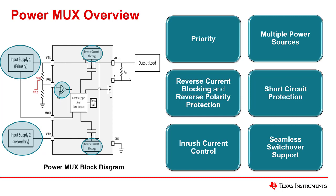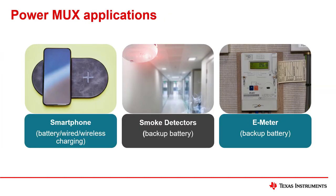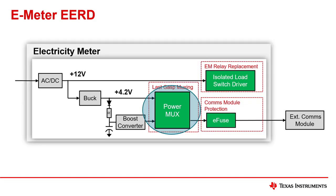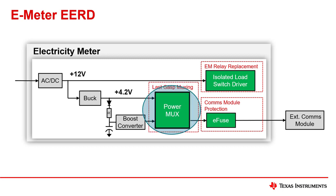They are useful for applications where multiple sources can be used to power one product. For example, cell phones today have wireless and wired charging. Depending on the power mux used, it can prioritize which source to use to power the phone. Other examples include smoke detectors and e-meters. Here's an e-meter reference design and where a power mux could fit in. Also, make sure to check out ti.com/power-mux to find the best power mux for your device.